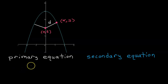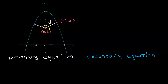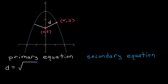When you solve an optimization problem, you will usually write a primary equation and a secondary equation. The primary equation is going to represent the quantity that you are trying to optimize. And the secondary equation will reflect some other constraint that you are limited by. In this case, we are trying to minimize the distance between these two points, so our primary equation will be a distance equation. We are just going to use the distance formula to create this equation.